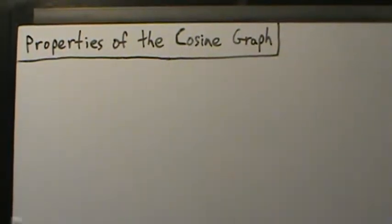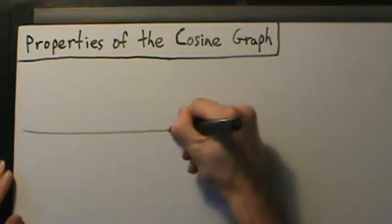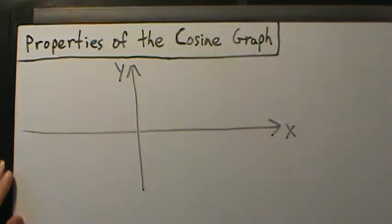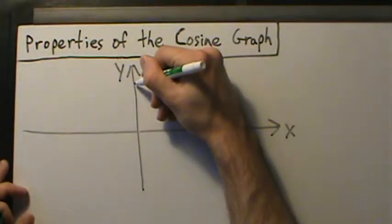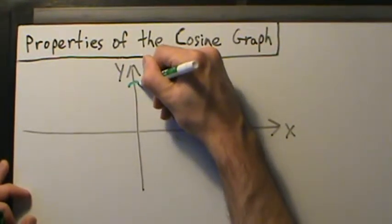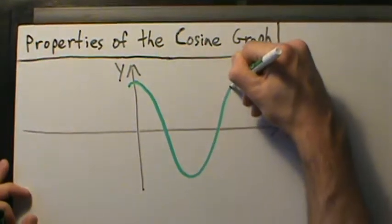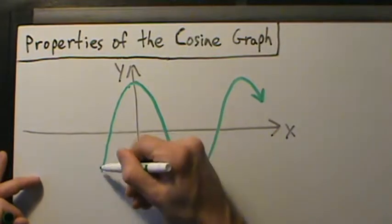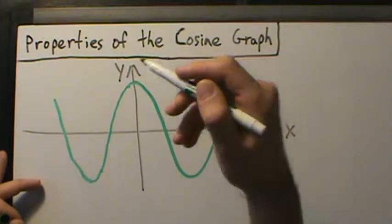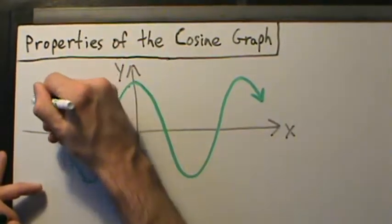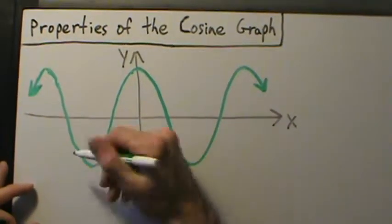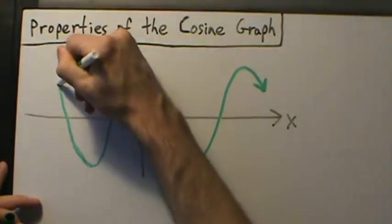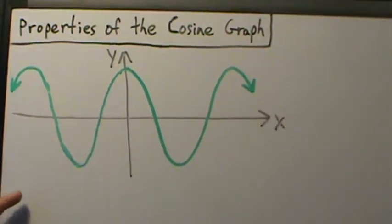In this video, we're going to start talking about properties of the cosine graph. In the last video, we talked about properties of the sine graph, and now we're going to do the same thing but with the cosine graph. Some of these properties are kind of the same but most of them are a little bit different. So what we want to do first is recreate the graph of the cosine function — we know what it looks like from an earlier video — so we'll just recreate it here as a rough sketch.